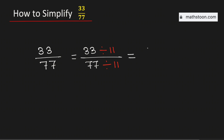By doing so we will get 3 over 7. As both 3 and 7 are prime numbers, this fraction cannot be simplified further. Therefore the fraction 33 over 77 simplified is equal to 3 over 7, and it is its lowest term. And this is our final answer.